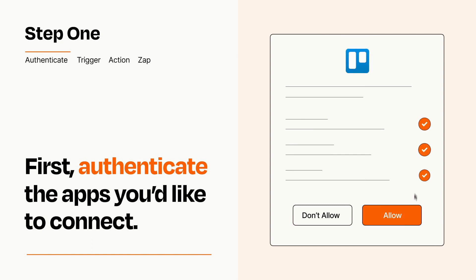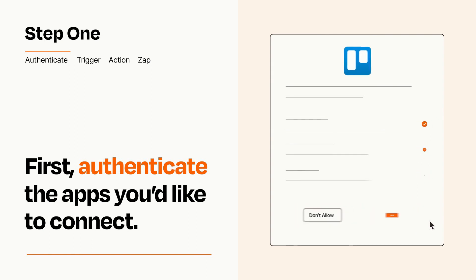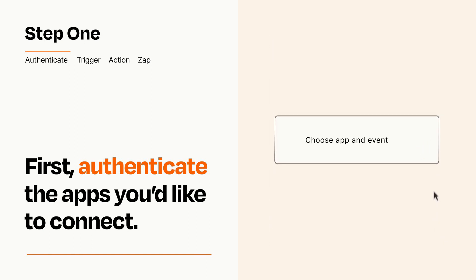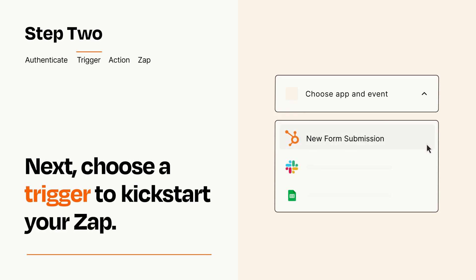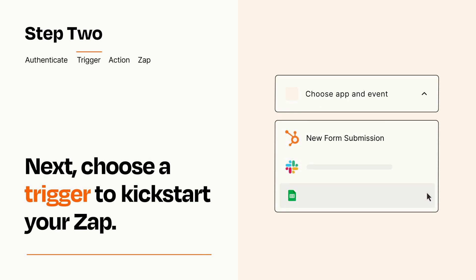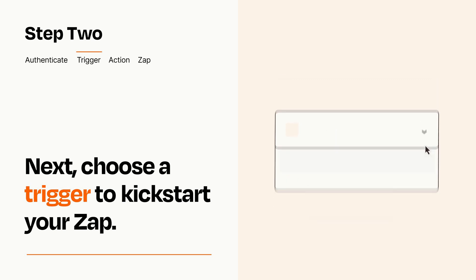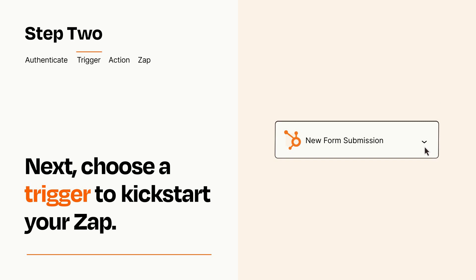Zapier meets industry standards for encryption when connecting with each of your apps. Now let's set up your trigger, which is the event that starts your Zap. Pick the trigger event that you want from the list. When you set up this step, your Zap will pull in test data from your trigger app that you'll see later when setting up your action app.